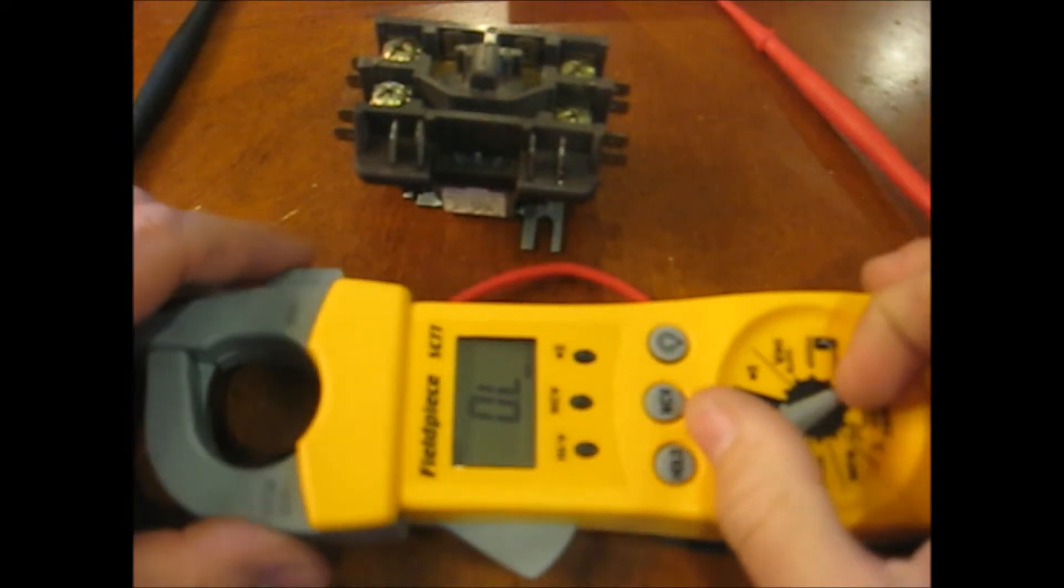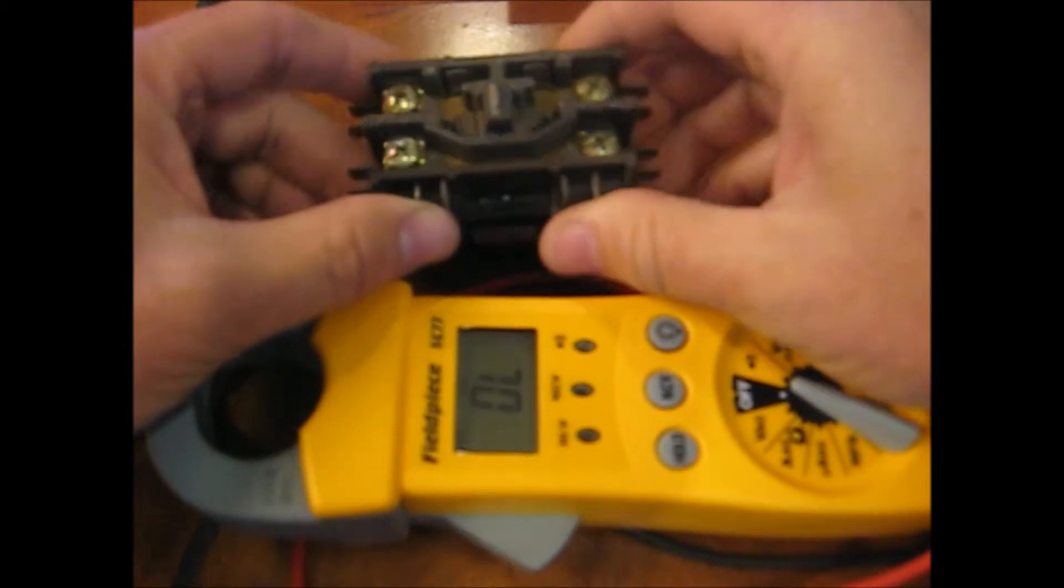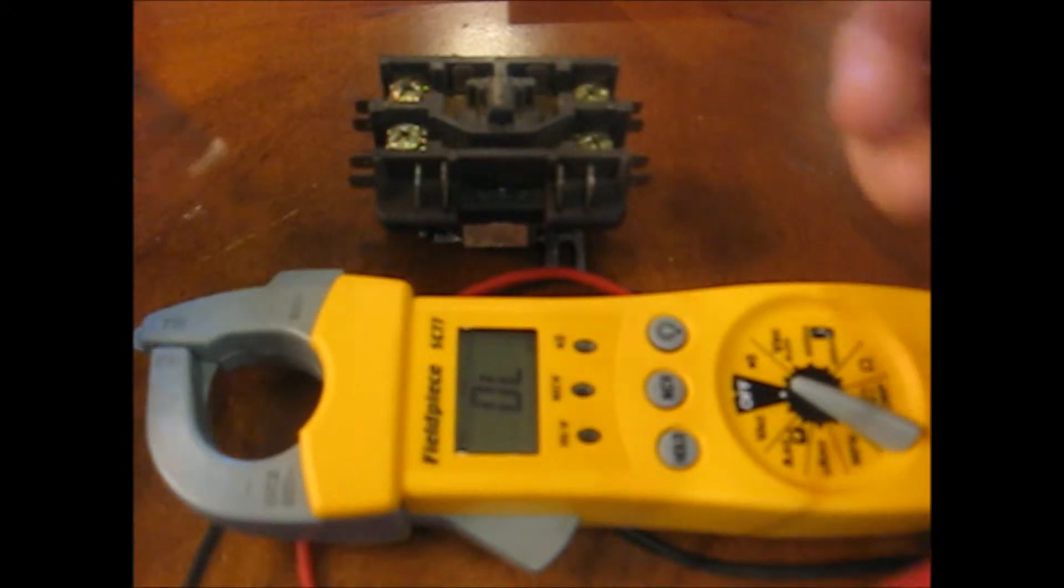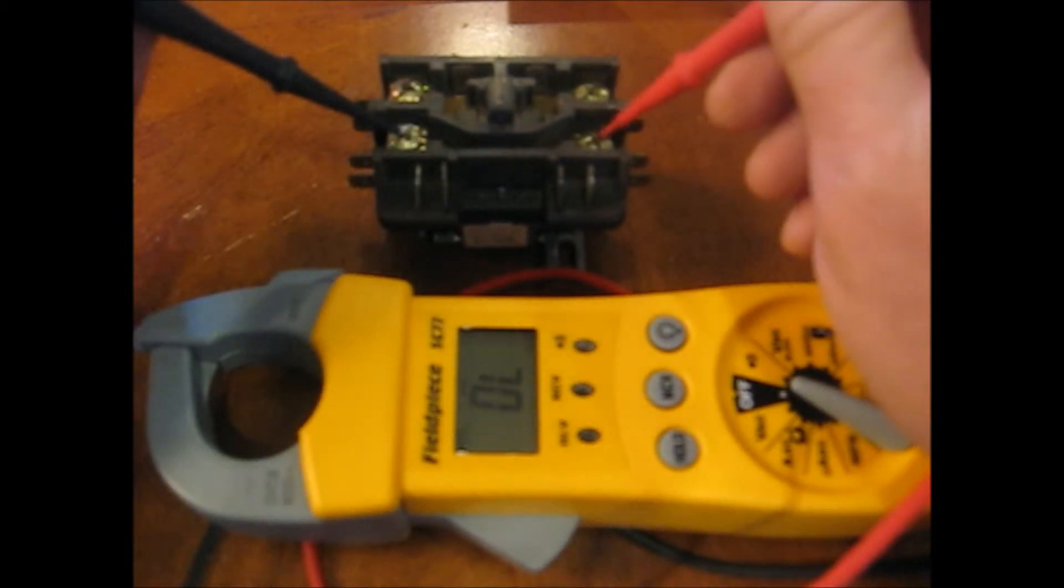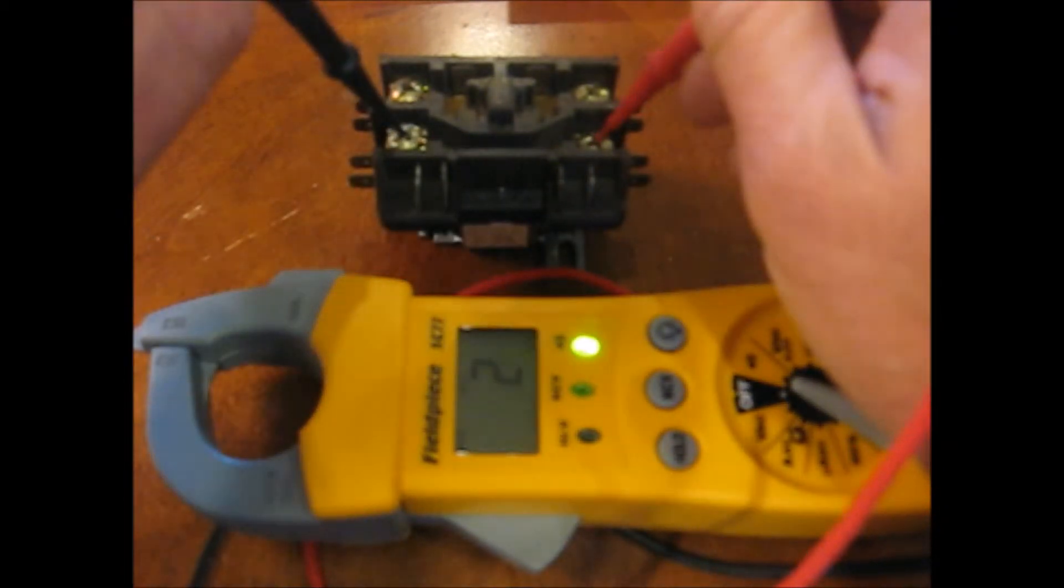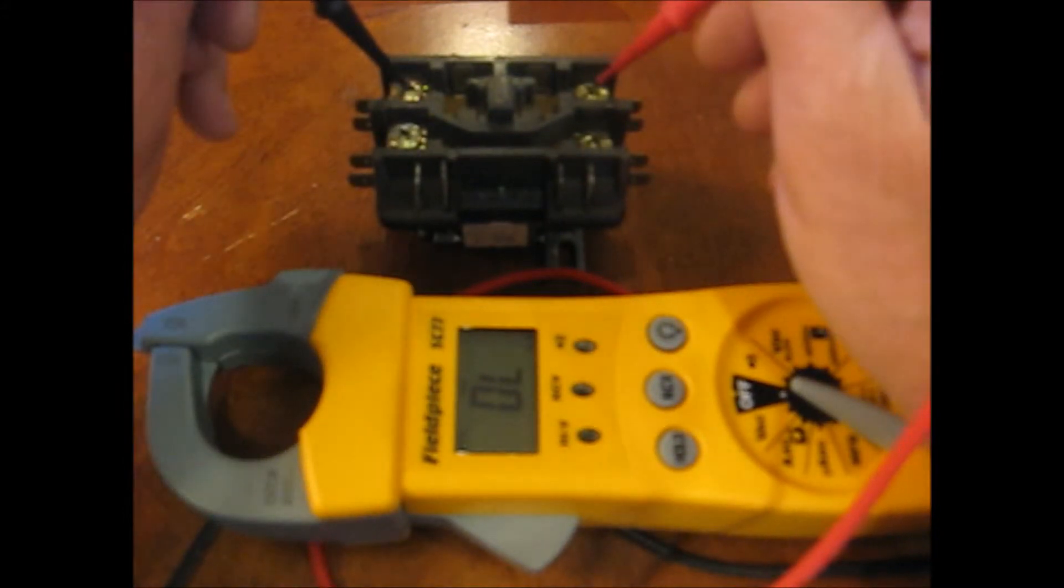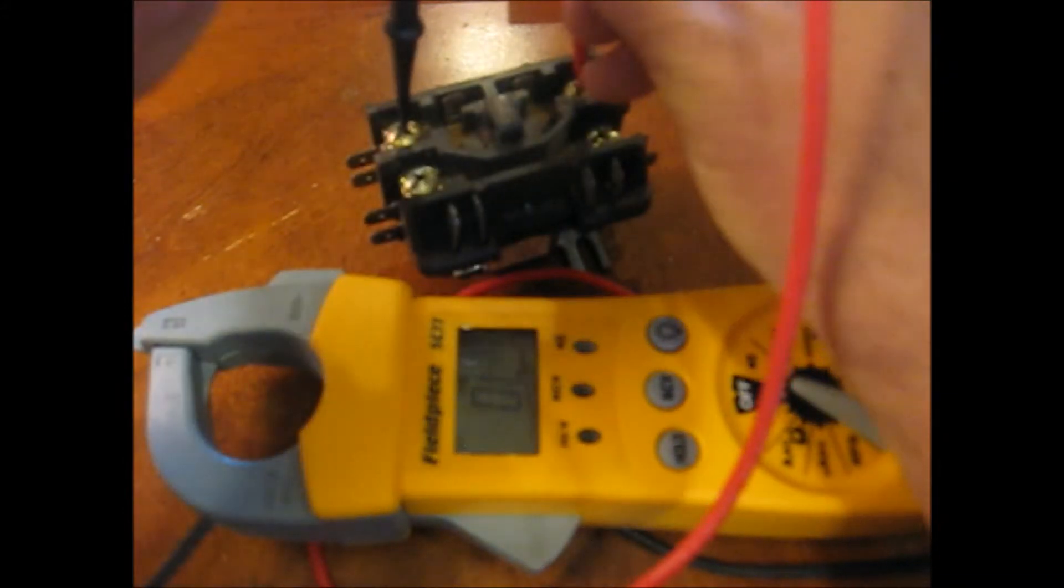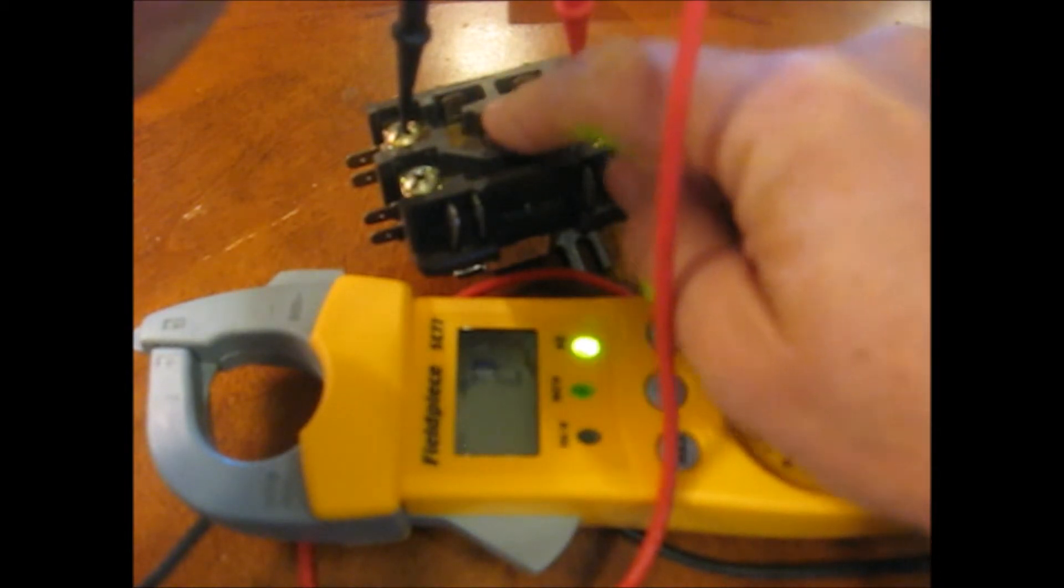Let's go back to continuity here. I'm going to show you what we mean by the single poles now. This is the line side and the load side. So we have continuity across there. And this is the other line and load. And notice we have no continuity until we press in the switch.